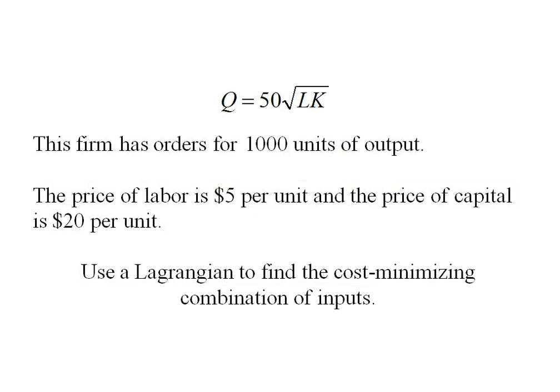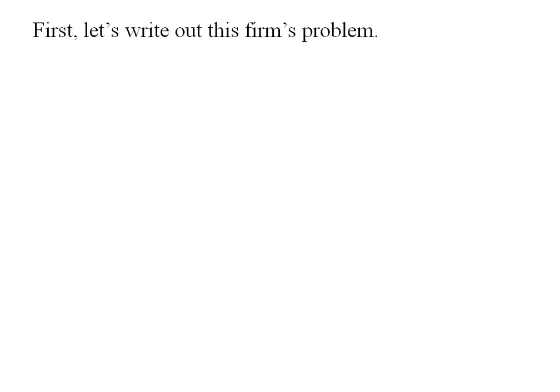Here's the same problem we just did, but now we're going to solve it using a Lagrangian. First let's write out this firm's problem. They want to minimize total cost by choice of labor and capital. That's what that squiggly bracket means.